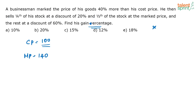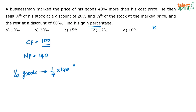He is selling one-fourth of his stock at a discount of 20%. The marked price of these one-fourth goods is one-fourth of 140. He is selling this at a discount of 20%, meaning he is selling it for 80% of the marked price. So this is the selling price of one-fourth of the goods.